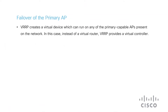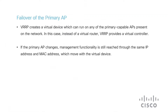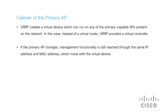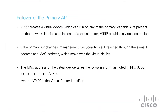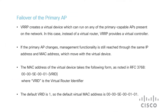VRRP creates a virtual device which can run on any of the primary capable APs present on the network. In this scenario, instead of a virtual router, VRRP provides a virtual controller. If the primary AP changes, management functionality is still reached through the same IP address and MAC address, which move with the virtual device. The MAC address of the virtual device takes the following form as defined in RFC 3768, and the default virtual MAC address is 00-00-5E-00-01-01.